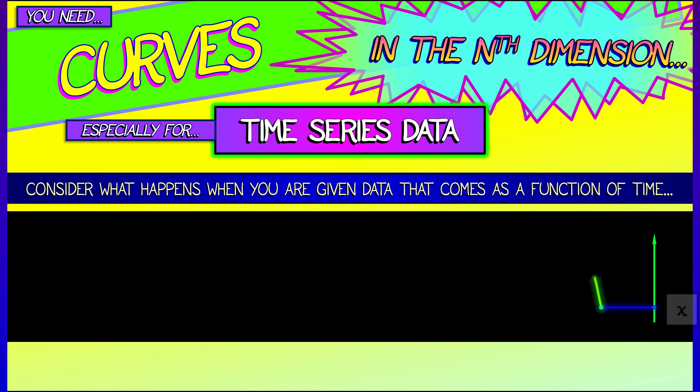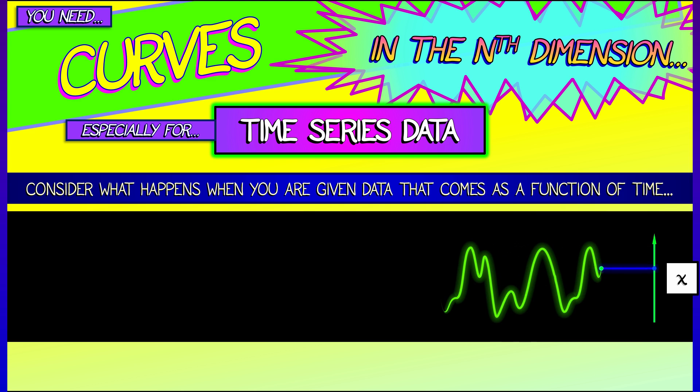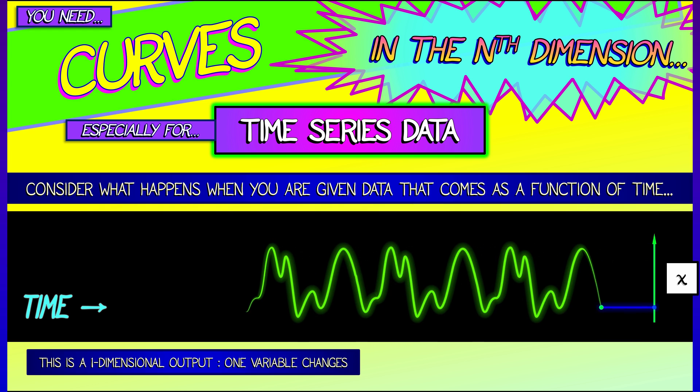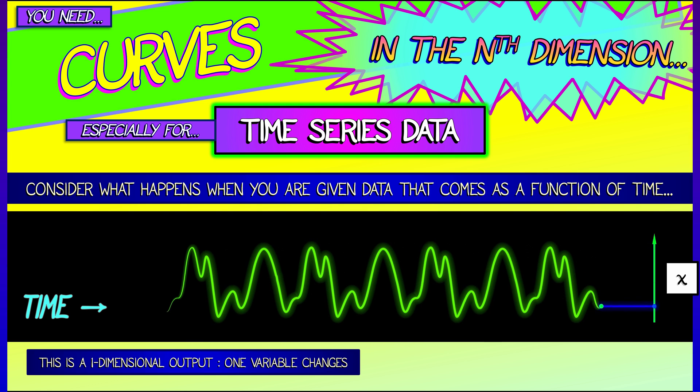Consider some variable, let's call it x, that is evolving over time. And you're given this data. Maybe it's from some experimental rig. Well, this is really a one-dimensional output. You've got one variable changing.